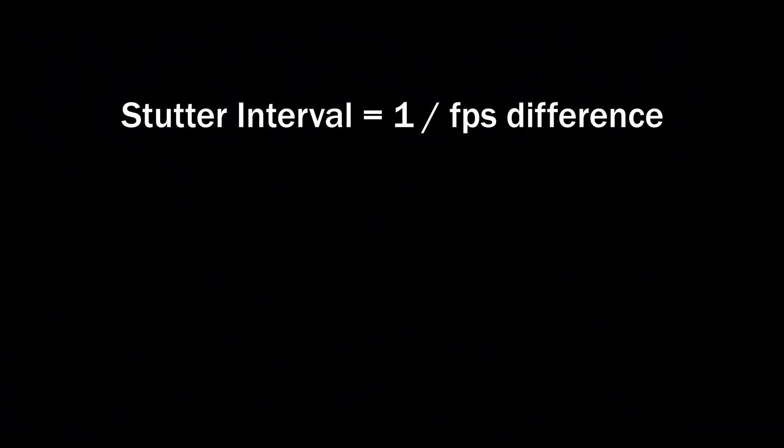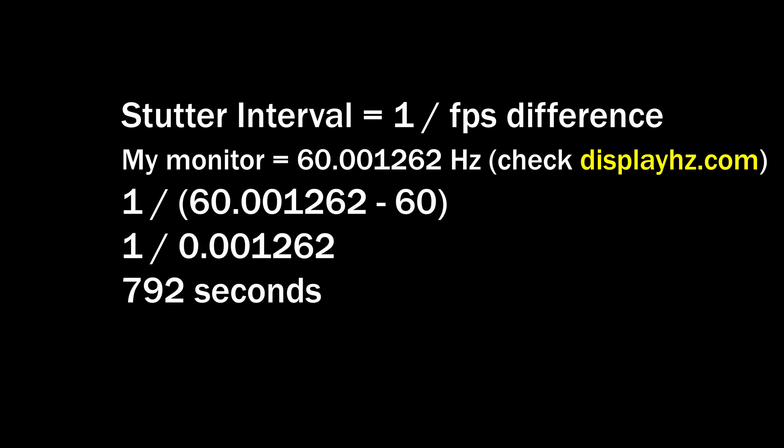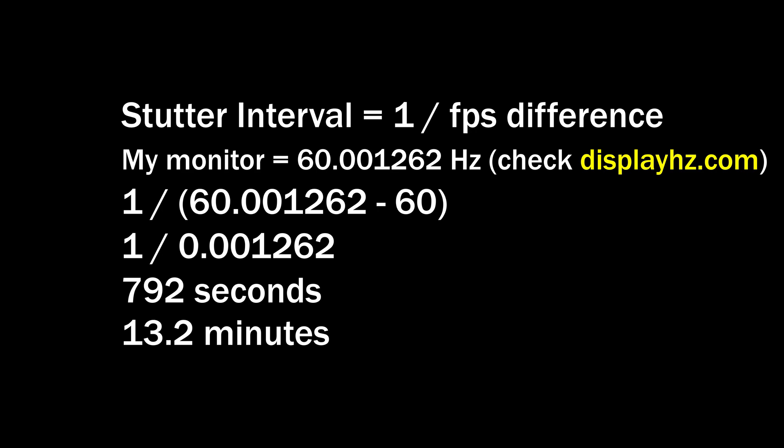Now we know the formula for the stutter interval: it is 1 divided by the frame rate difference. Before applying my fix, my random stutter was as long as 20 seconds of stuttering with around a 13-minute interval. That's because my monitor refresh rate was approximately 60.001262 Hz — using the formula, 1 divided by 0.001262 equals 792 seconds, which translates to a 13.2-minute interval. Those stutters encouraged me to do this research, and I finally found the solutions after weeks of countless testing, PC restarts, and thousands of game recordings.